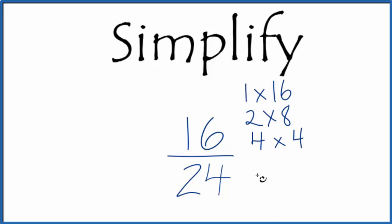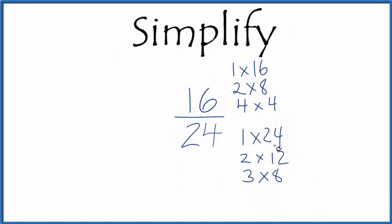For 24, the factors, we have 1 times 24, 2 times 12, 3 times 8, and 4 times 6. And I think these are the factors for 24.